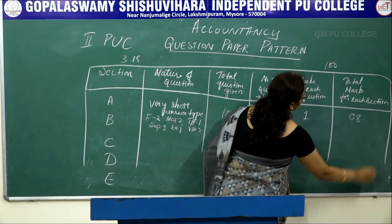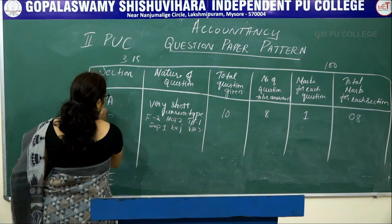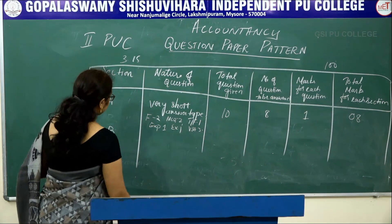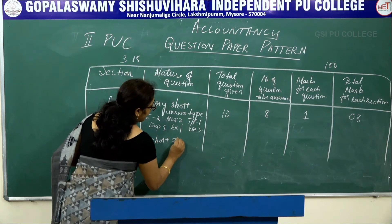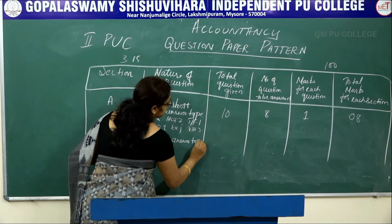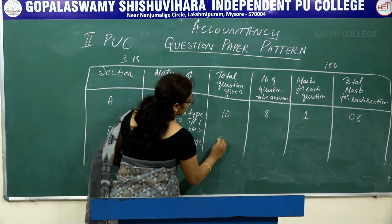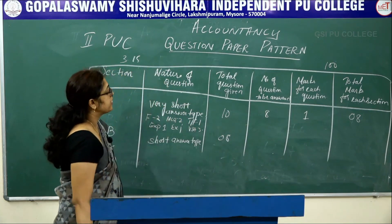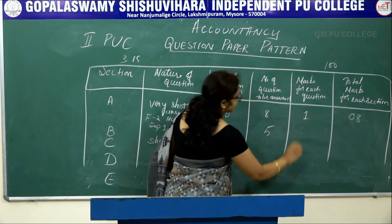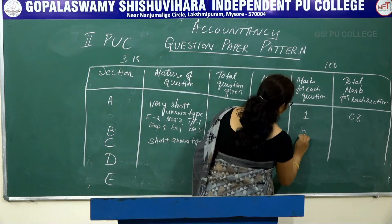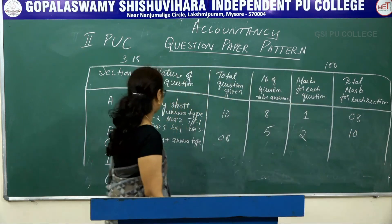The number of questions to be answered in Section A is 8. Marks for each question is 1, so total marks for Section A is 8. Part B consists of short answer type questions. Total number of questions given is 8, and the number of questions to be answered is 5. Each question carries 2 marks, so total 10 marks is allotted to this section.